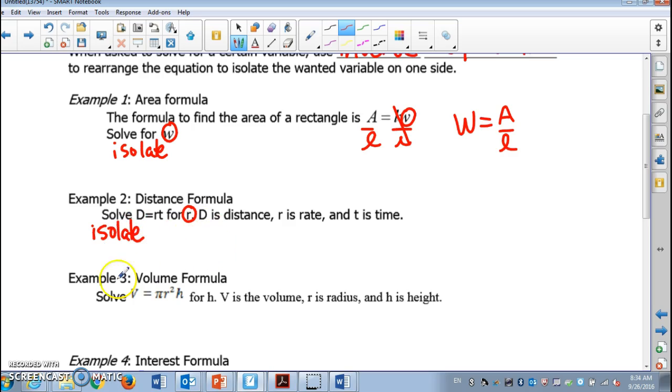D is equal to RT. If I wanna isolate R, what do I need to get rid of? Yes, we need to get rid of T. What operation do you see between R and T? It's multiplication. So in order to undo that, we divide.